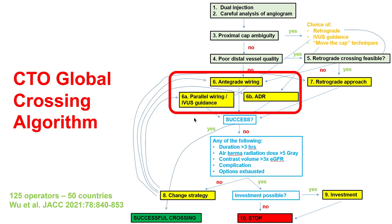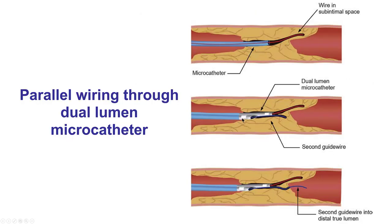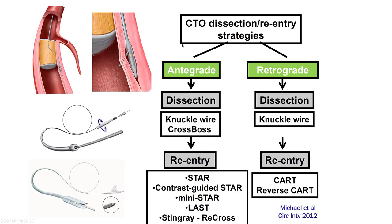Step six is antegrade wiring, which remains the most common initial approach to crossing CTOs. If it does not work, the two major options are parallel wiring or IVUS guidance for reentry, or antegrade dissection and reentry. In parallel wiring, the original wire goes into the extraplaque space and then a second wire and microcatheter redirect into the distal true lumen — this can also be done through a dual lumen microcatheter. For antegrade dissectional reentry, the most common dissection methods are the knuckle wire or CrossBoss catheter, and reentry is usually done with a device, most commonly the Stingray, though the ReCross catheter is increasingly being used as well.